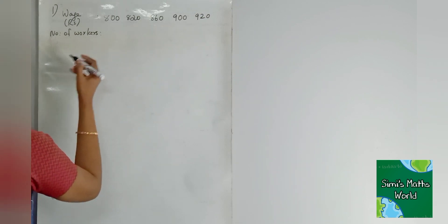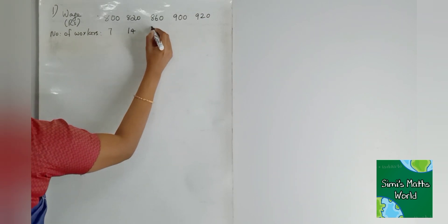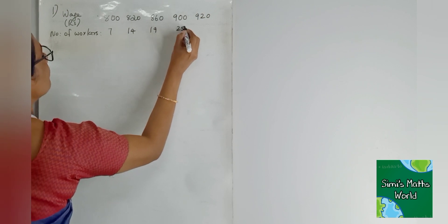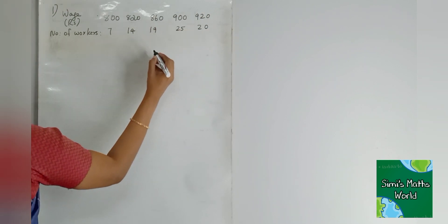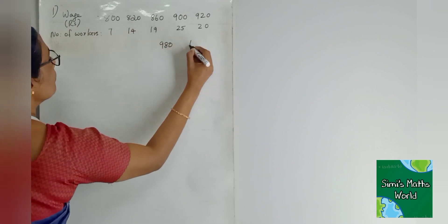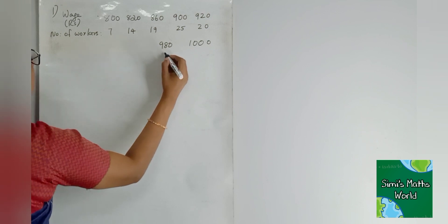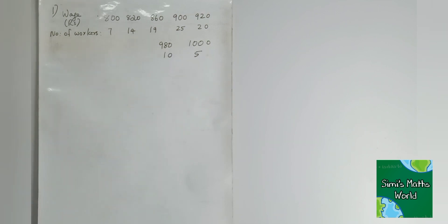Find the mean wage from the following data. Wage in rupees: 800, 820, 860, 900, 920, 980. Number of workers: 7, 14, 19, 25, 20, 10, and 5. Find the mean wage. We will use the step deviation method and first set up columns for xi and fi.